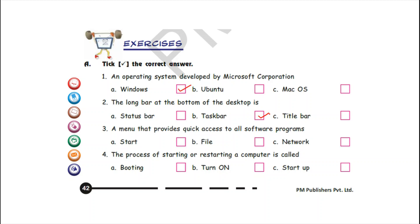Number three: a menu that provides quick access to all software programs — it is the start menu. So write a tick mark in front of option A, Start. Number four: the process of starting or restarting a computer is called booting. So put a tick mark in front of option A, booting.